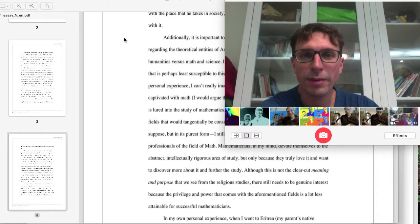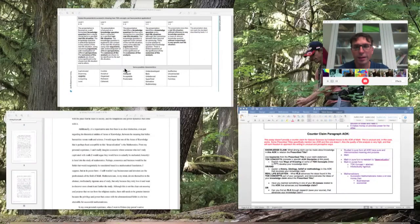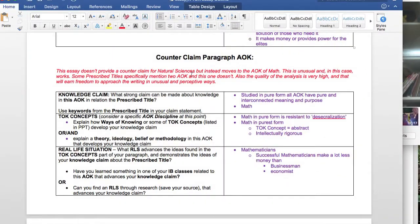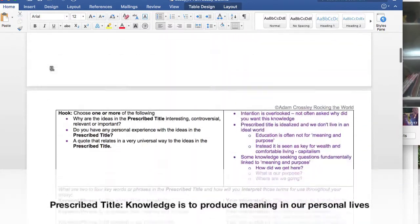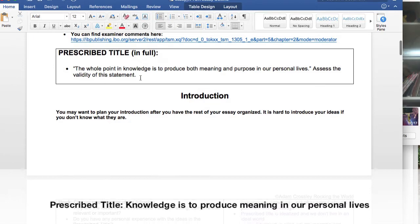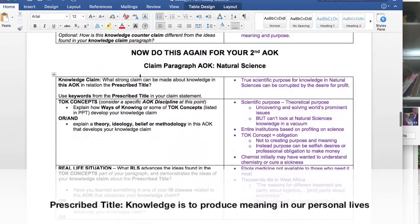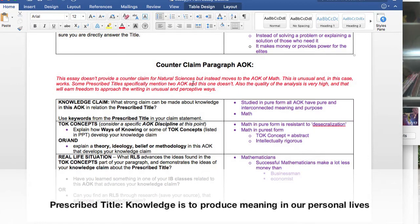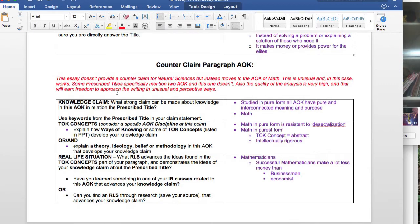This next paragraph jumps to a different AOK, to math, which is unusual. Usually, if you write a claim in one AOK, you write the counterclaim in the same AOK. Now, this essay is addressing a prescribed title that doesn't mention two AOK explicitly. Many do, so that's one reason for the freedom here. And the other reason is this one's operating at a very high level, and when you're writing very well and making good logical conclusions, it earns you some freedom.